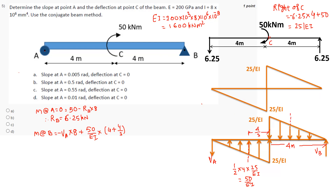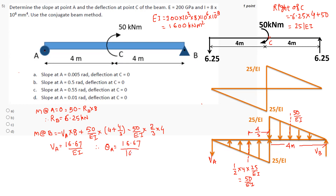We also have 50/EI for the other portion, acting at two-thirds of 4, so (50/EI) × (8/3), and setting the whole expression equal to zero. Solving, VA = (400/3) ÷ 8 = 16.67/EI. Therefore theta_A = 16.67 / EI = 16.67 / 1600, which gives 0.01 radians.